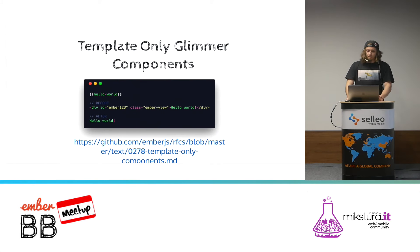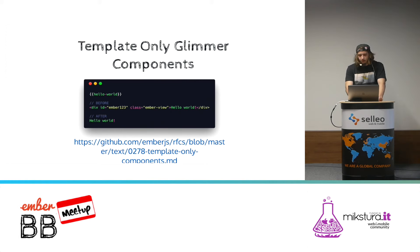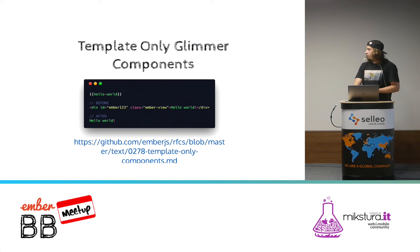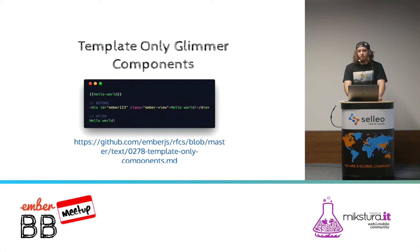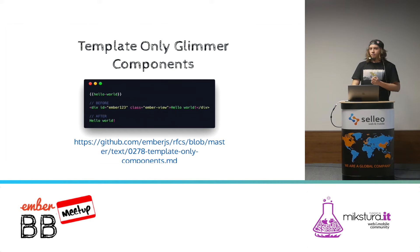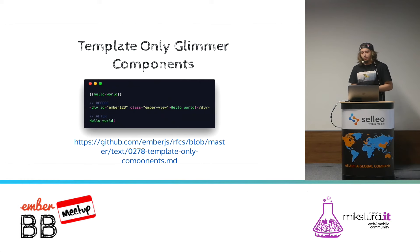One of these is Template-only Glimmer components. Ember normally wraps component content in a div, but with this feature flag it will render a pure Glimmer component, which is really fast. So if you have a problem rendering long lists or large amounts of data, you can try using template-only Glimmer components to speed things up.